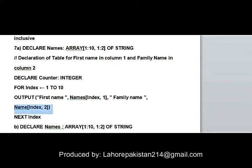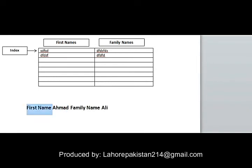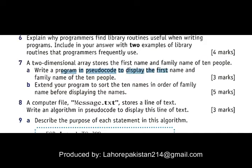From the second column, the family name will be picked. The output will display a string: first the label 'First Name' followed by the actual first name, then the label 'Family Name' followed by the family name. For example, if the first name is Ahmed and the family name is Ali, the output will read: 'First Name: Ahmed, Family Name: Ali.' This is how all 10 names will be displayed.